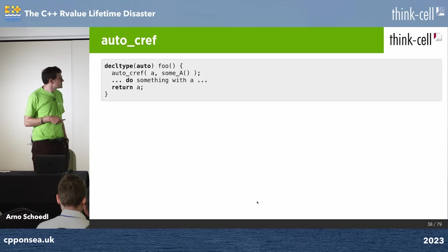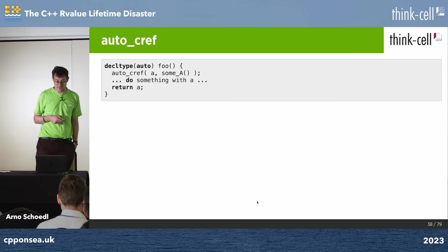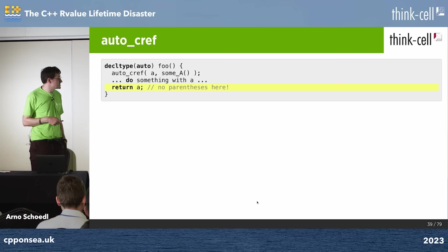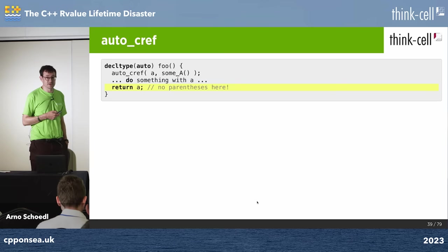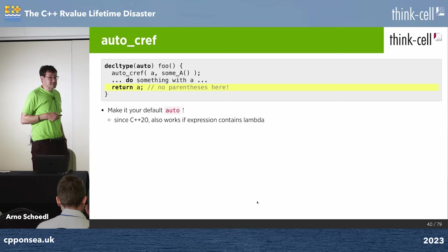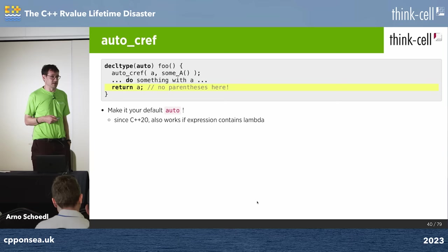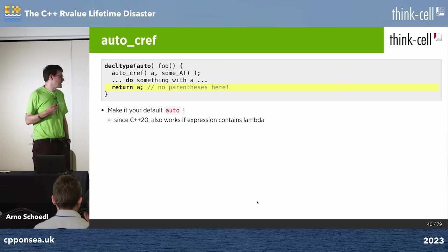This is how it looks: instead of auto const& you write auto_cref, and automatically the right thing happens. You have a function foo that does auto_cref a = someA(), does something with a, and returns it. That all works because a is a value if someA() returns a value, and a reference if it returns a reference. Watch out: don't put parentheses around the returned variable when you use decltype, because you need the declaration type — not the expression type — otherwise you get a dangling L-value reference instead.